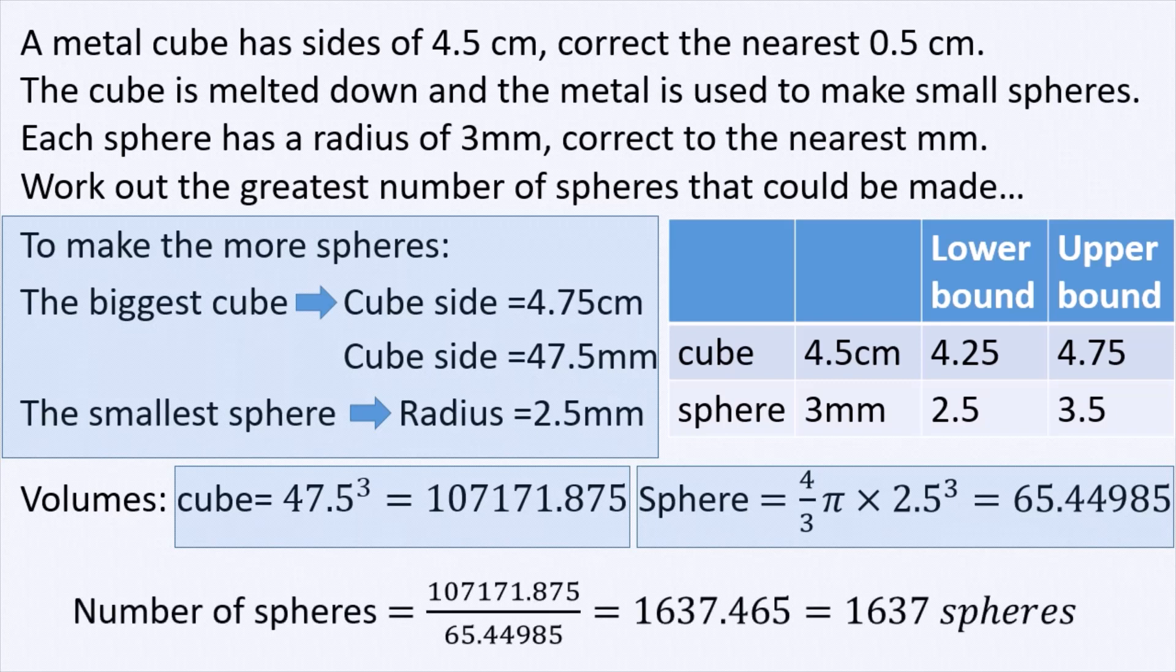And finally, to get the number of spheres, we divide the volume of the largest cube by the volume of the smallest sphere. And we end up with 1,637.465. But since we cannot have a fraction of a sphere, we round this number to 1,637 spheres. And this is the right answer.